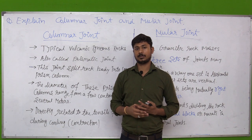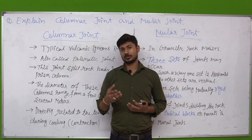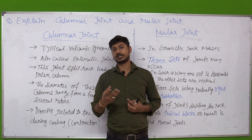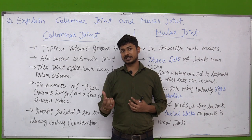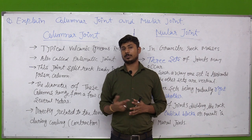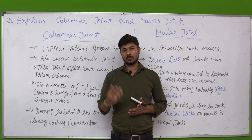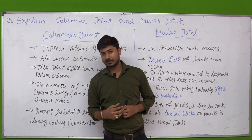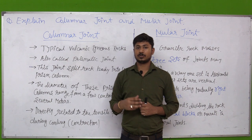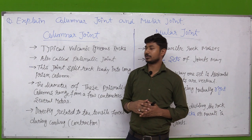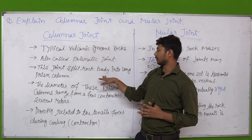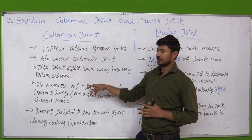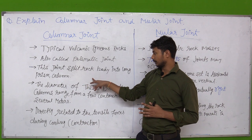Columnar joints split the rock body into long prisms, which we call columns. These joints divide the rock body into long prism-shaped columns.